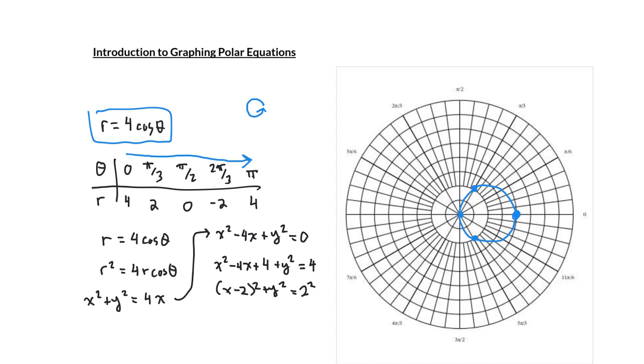And then factoring the x's gives you x minus 2 squared plus y squared equals 2 squared. And this is convincing us that this is not only a circle, but it has a center at 2 comma 0, as you can see in the picture. And it has a radius of 2, as you can also pretty clearly see in the picture that the circle there has a radius of 2.